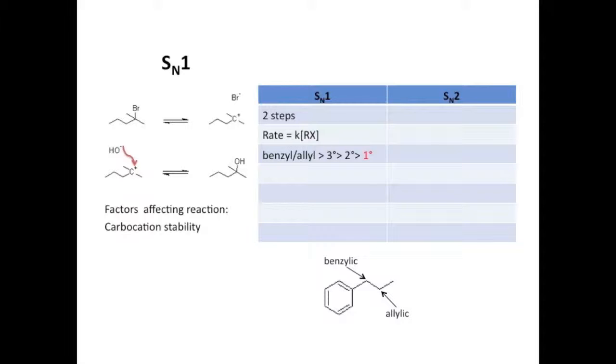The more stable the carbocation, the more likely the leaving group is to dissociate, and the more likely the SN1 reaction is to actually happen. So benzylic and allylic carbocations, and you can see the positions below the chart, are the most stable. They are able to stabilize the positive charge through resonance, and they will be the most readily to undergo SN1.